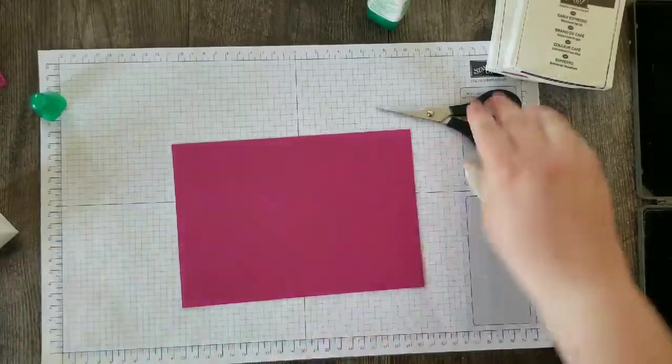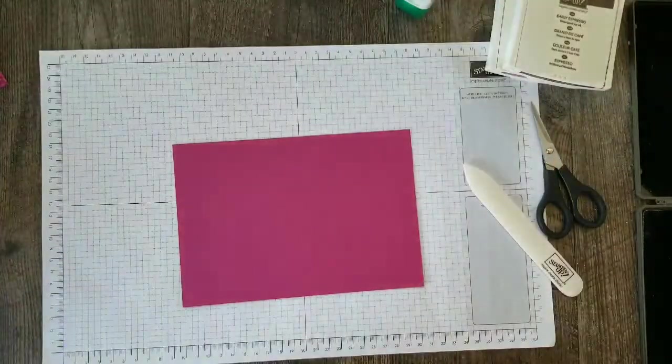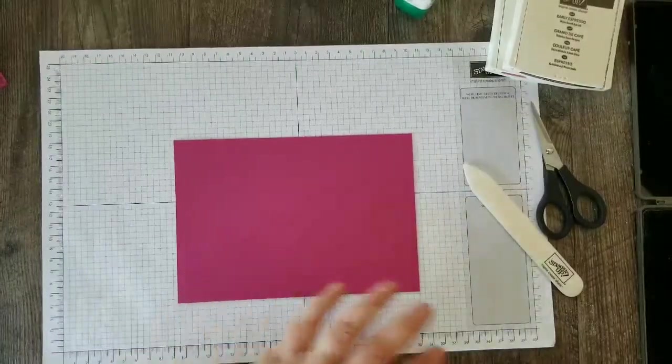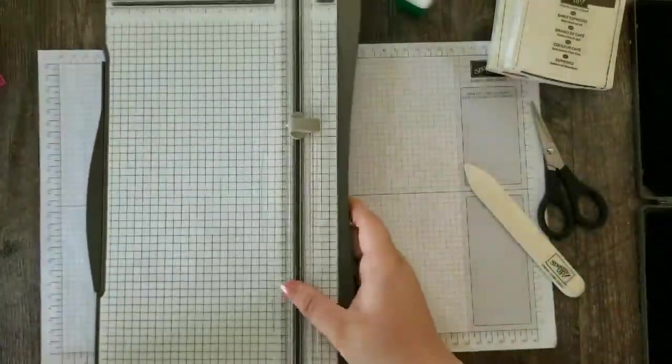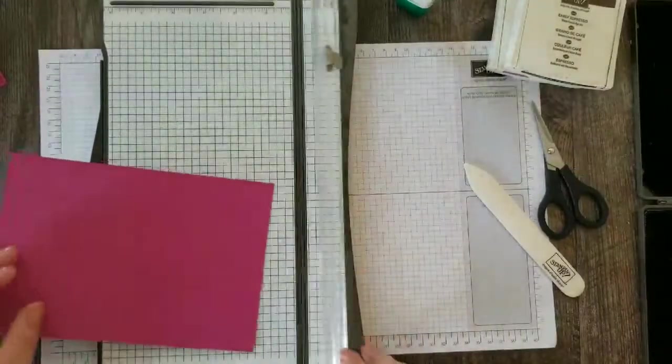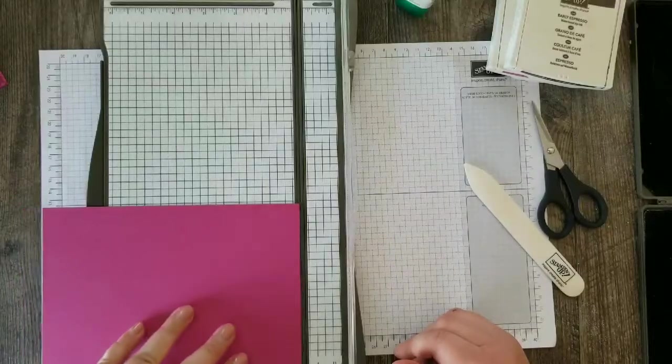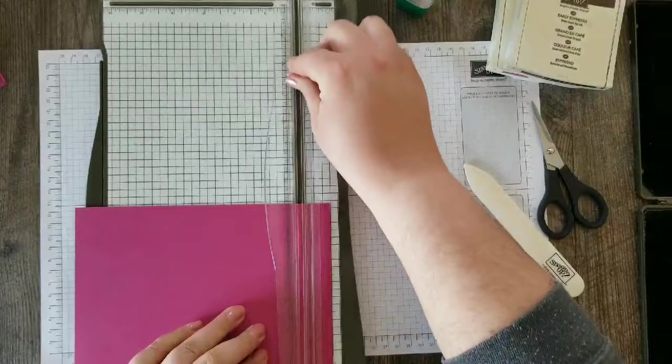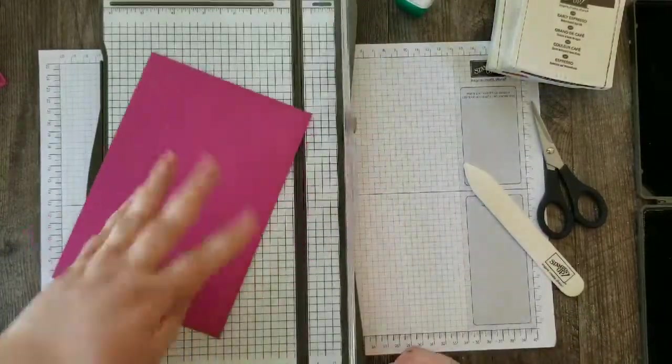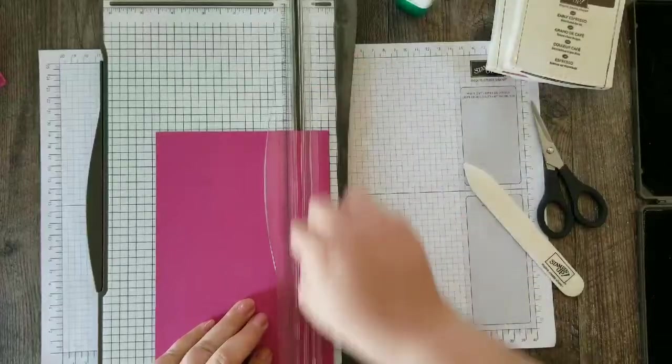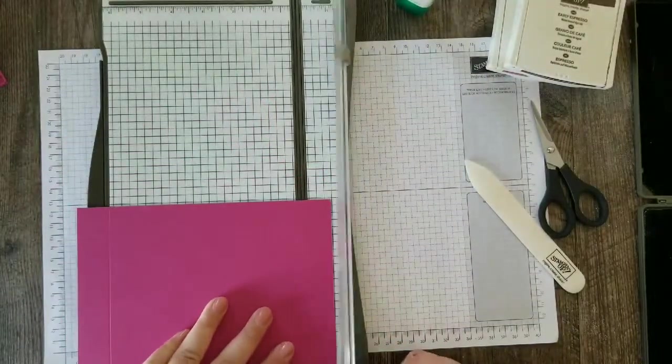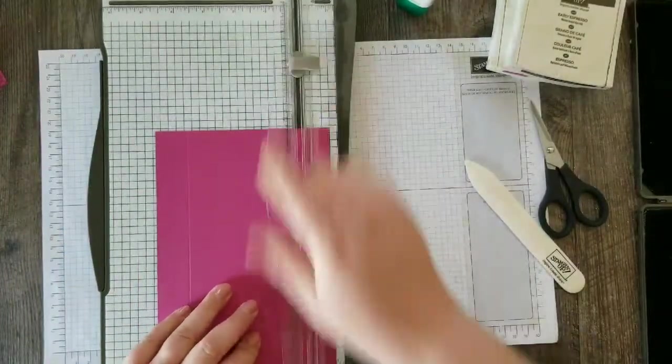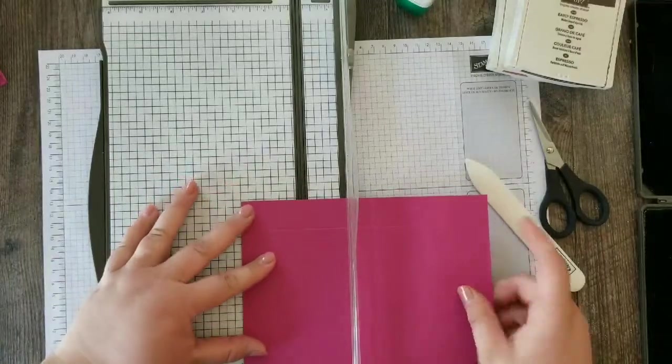Now we are on to our Berry Burst box top. And this is cut at 8 1⁄8 by 5 5⁄8. And we're going to come in and score at 1 inch all the way around and then at 2 inches all the way around. So first I'm going to do 1 inch.